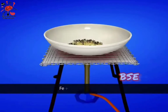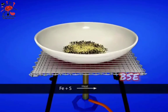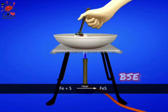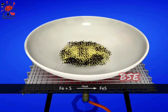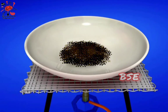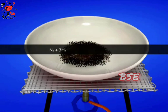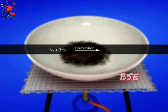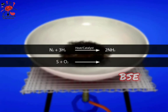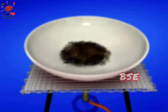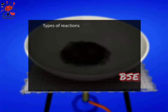Sulfur combines with iron on heating to give iron sulfide. Let us see some more examples of combination reaction. There are different types of chemical reactions.